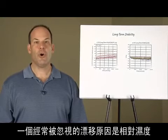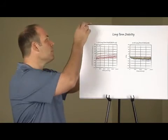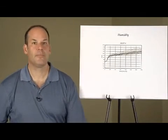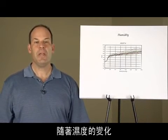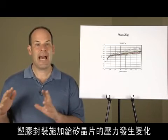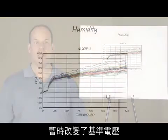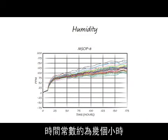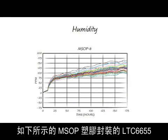One often overlooked cause of drift is relative humidity. Plastic mold compounds absorb water. As humidity changes, the pressure exerted on a silicon die by the plastic package changes, temporarily altering the reference voltage. The time constant is on the order of several hours, and the change can be in excess of 150 ppm, as shown here for the LTC6655 in plastic MSOP.